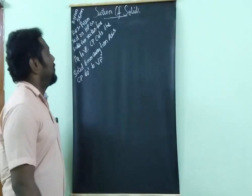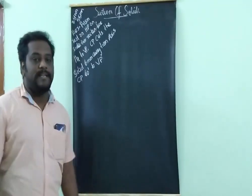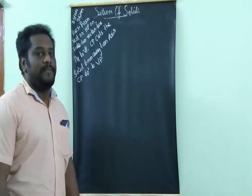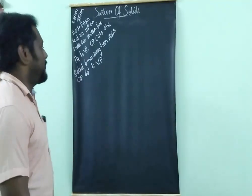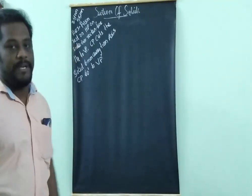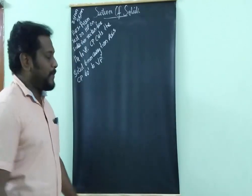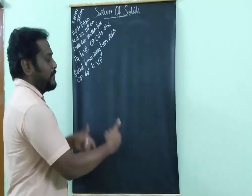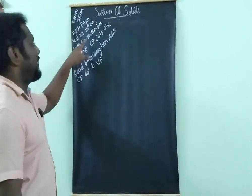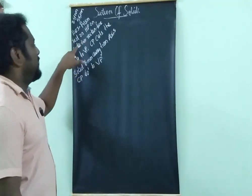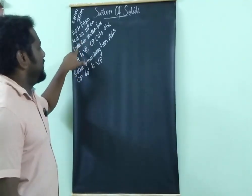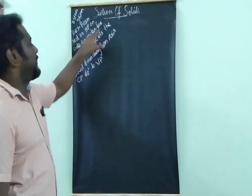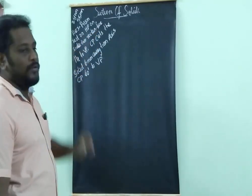Welcome back. In this problem, a hexagonal prism of side 25 mm and axis 55 mm is given. It is resting on HP with its side and two rectangular faces parallel to VP. If it is resting on HP, the true shape or polygon will come below the XY line.